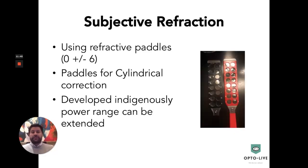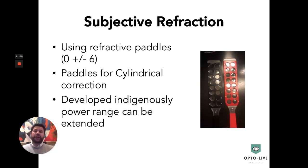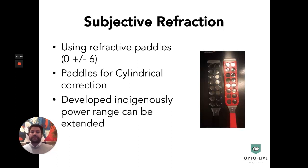Now that we have our objective prescription, what do we do for subjective refraction? Using the same charts shown earlier, we have developed refractive paddles — a red and a black paddle, one being a plus paddle and one a minus paddle — which contain different spherical and cylindrical prescriptions. These allow us to ascertain the new prescription required by the patient. This is developed indigenously by us; the power range can be extended as required and many different paddles can be created. Currently we have them from plus or minus up to six diopters.